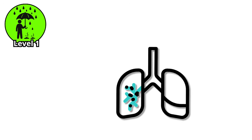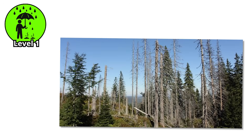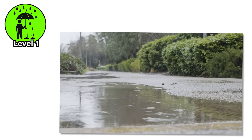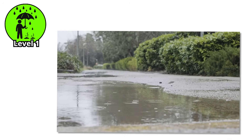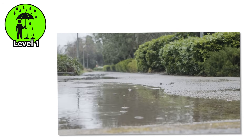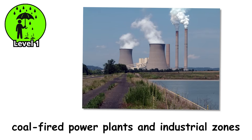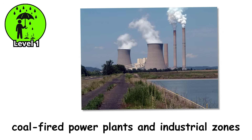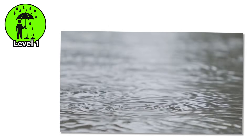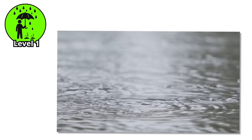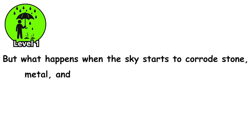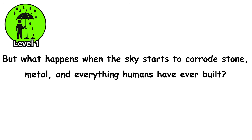If you had asthma, your lungs might tighten. If you're a pine tree, your roots are already dying. And even now, this level is still common in many parts of the world, especially near coal-fired power plants and industrial zones with little to no emissions control. This is just the beginning. The rain is still soft, still clear. But what happens when the sky starts to corrode stone, metal, and everything humans have ever built?